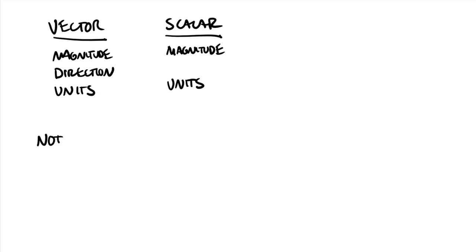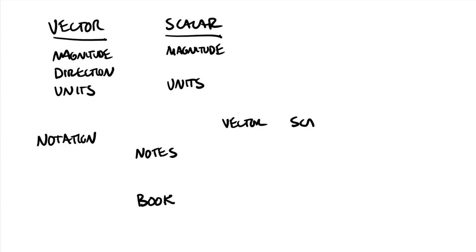As far as notation goes, in my handwritten notes and in the book we use subtly different notation for vectors and scalars. In my handwritten notes, a vector is written with an arrow over the top — that arrow is the key thing. In your book, a vector will look like a bold-face font, so bolded. For scalars, in handwritten notes it will just look like a plain letter, and in your book a scalar will typically be written in italics.